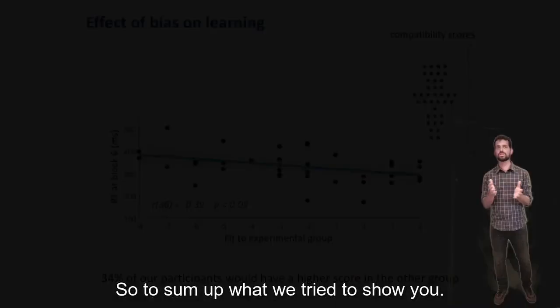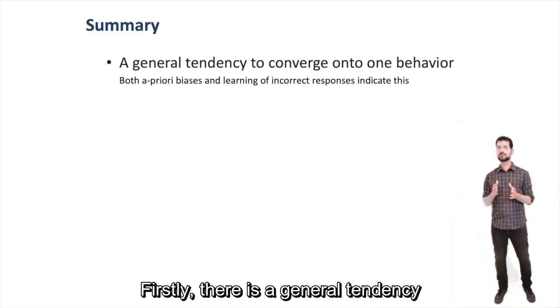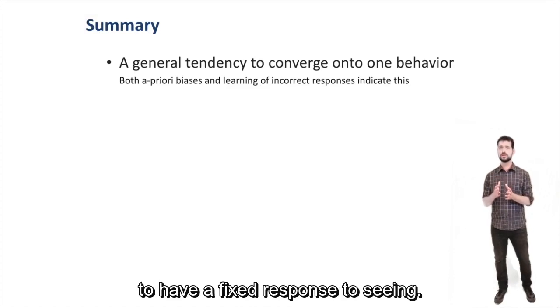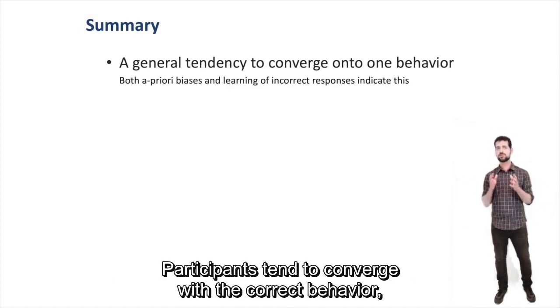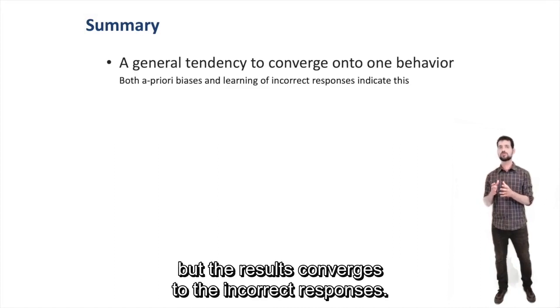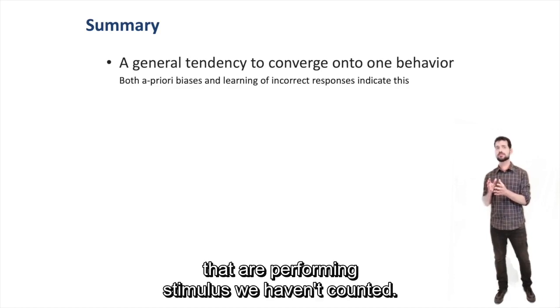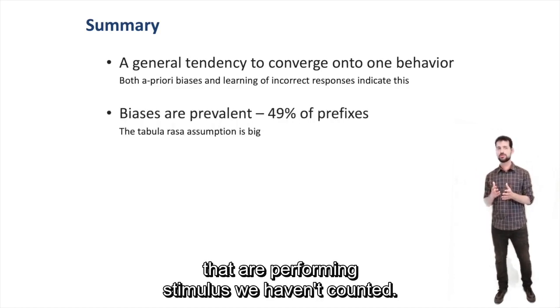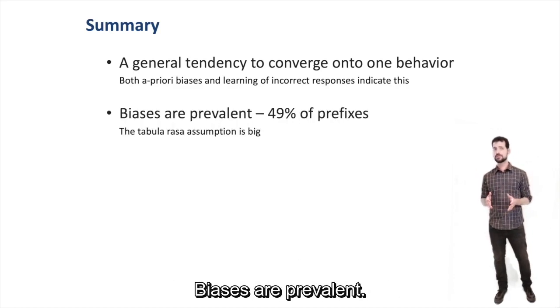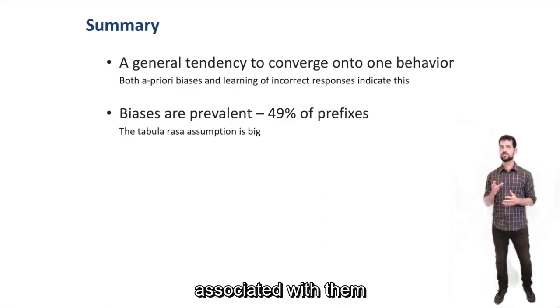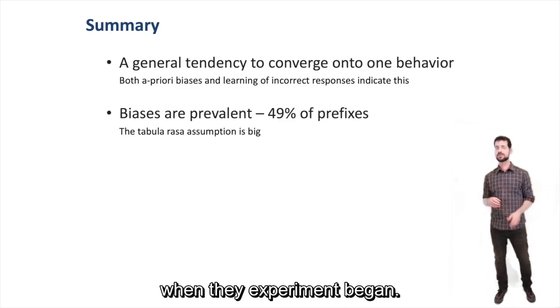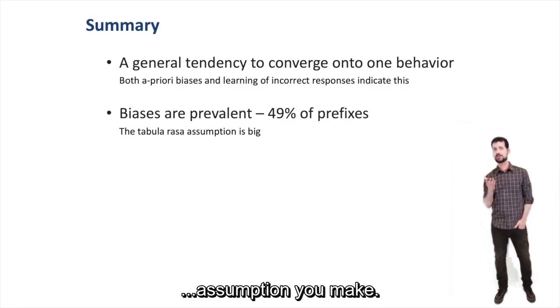So to sum, what did we try to show you? Firstly, there is a general tendency to have a fixed response to stimuli. When I see 2-1, I look towards 4. Participants tend to converge to the correct behavior, but there is also convergence to incorrect responses. And also, there are consistent biases that are there before any stimuli had been encountered. Biases are prevalent. 49 percent of triplets had a consistent behavior associated with them when the experiment began. This underscores the size of the Tabula Rasa assumption we made. Participants aren't a clean slate towards the stimuli entering. Biases have a long-lasting effect on performance. The particular behavior participants had at the very first trials of the experiment affected their performance at least 648 trials down the line.